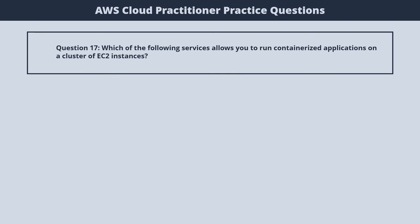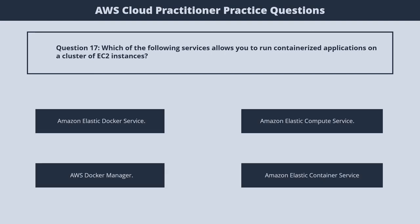Question 17. Which of the following services allows you to run containerized applications on a cluster of EC2 instances? 1. Amazon Elastic Docker Service. 2. Amazon Elastic Compute Service. 3. AWS Docker Manager. 4. Amazon Elastic Container Service. The correct answer is 4. Amazon Elastic Container Service.